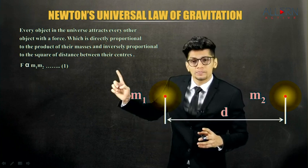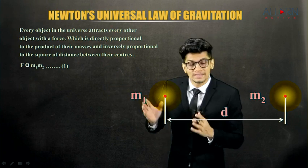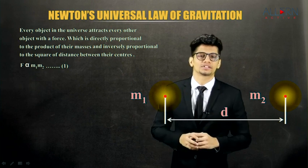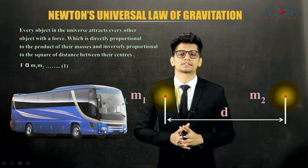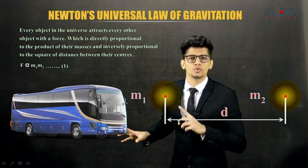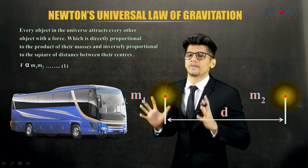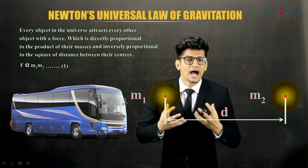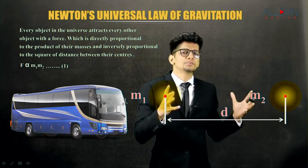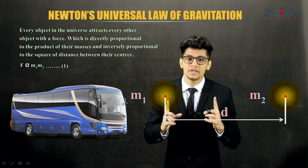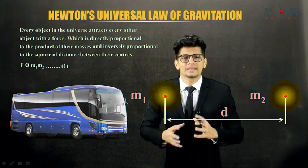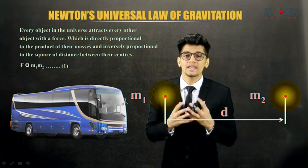This expression explains why we get attracted towards the Earth and not the objects around us. For example, if I am m1 and a bus is m2, the product m1 into m2 has a certain value. But if I am m1 and the Earth is m2, the product of our masses is much greater. Since the product of our masses with the Earth is far greater than with nearby objects, that is why we get attracted towards the Earth.